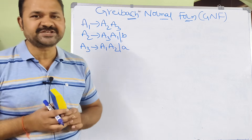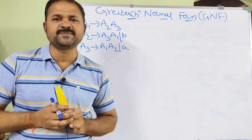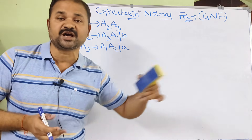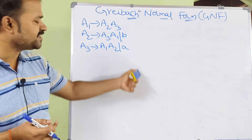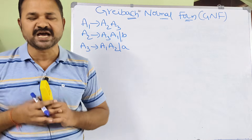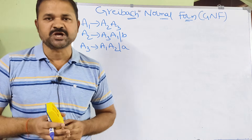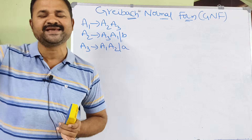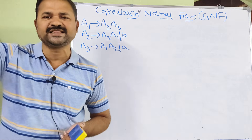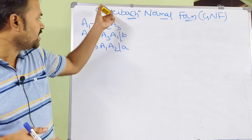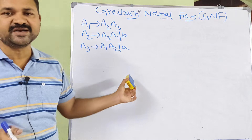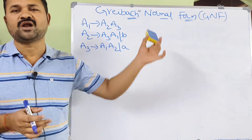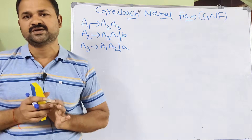The second step is to convert the grammar into Chomsky Normal Form. Already, this grammar is in Chomsky Normal Form. The third step is to replace the non-terminals by A1, A2, A3, etc. Already, those non-terminals are replaced by A1, A2, A3. So the first three steps are already done.